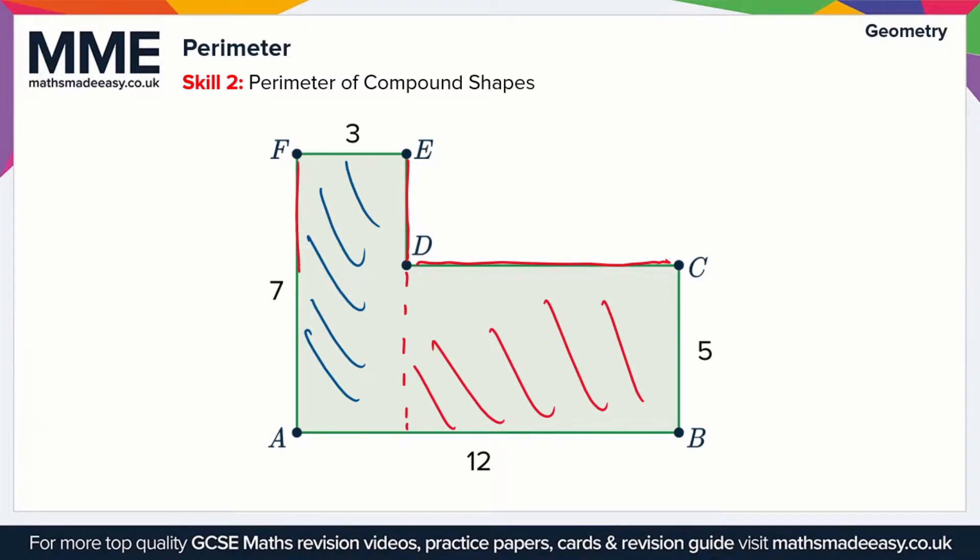This side here is parallel to the line ED and so is this line here. So that means that in order to calculate ED all we have to do is subtract 5 from 7. That gives us 2. So ED equals 2.